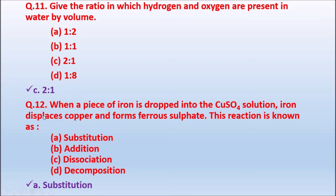Question 12: When a piece of iron is dropped into copper sulfate (CuSO₄) solution, iron displaces copper and forms ferrous sulfate. This reaction is known as — Option A: Substitution. Option B: Addition. Option C: Dissociation. Option D: Decomposition. This reaction is known as a substitution reaction, because iron replaces copper in copper sulfate to form ferrous sulfate.